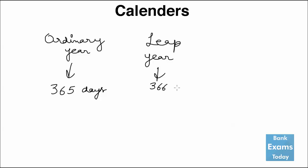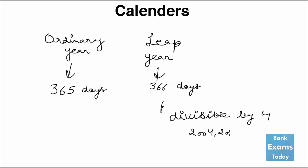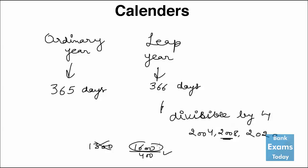There are 366 days in a leap year. A leap year is a year that is divisible by 4 — for example, 2004, 2008, and 2020 are leap years. But there is an exception for century years: century years should also be divisible by 400. So 1300 is not a leap year, while 1600 is divisible by 400 so it is a leap year. 2000 is a leap year, but 1900 is not.